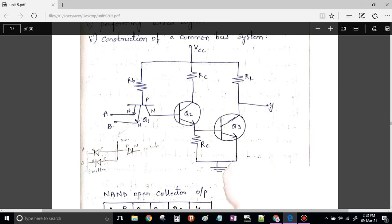TTL gates come in three different types of output configurations: open collector output, totem pole output, and tri-state output. Now in today's class, we are going to see about the open collector TTL NAND gate.